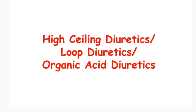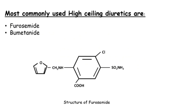Hello everyone. Myself Zeal Pet, and today we are going to study about high ceiling diuretics, which are also known as loop diuretics and organic acid diuretics. At the end of this video we will find out why they are called so. The most commonly used high ceiling diuretics are furosemide and bumetanide.